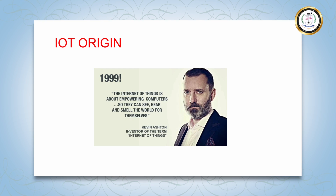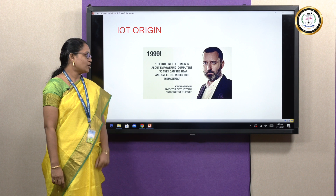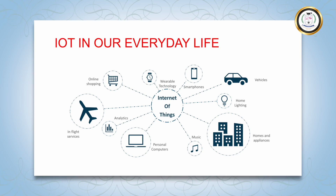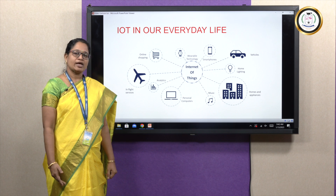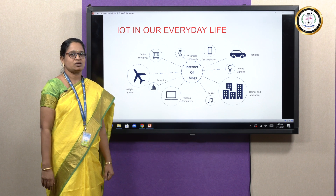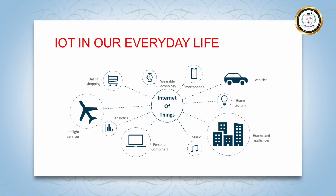IoT got its origin in the year 1999 by the computer scientist Kevin Ashton. He is the inventor of the term Internet of Things. Now, we use IoT in our everyday life. IoT is greatly applied in our smartphones. We use IoT in wearable devices like headsets, smart jewelry, and smart watches. We also use IoT in online shopping, flight services, musical systems, home appliances, etc.